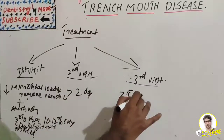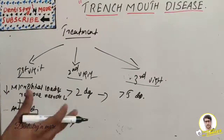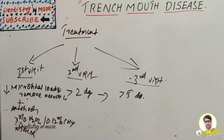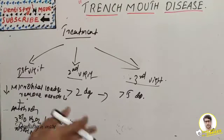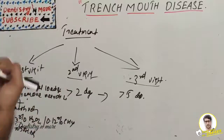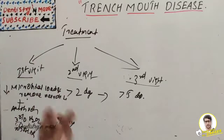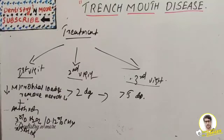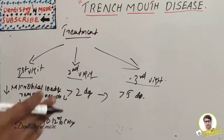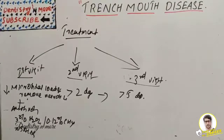On the third visit, approximately five days after the second visit, the patient is evaluated again and a comprehensive plan for management of the periodontal condition is formulated. Hydrogen peroxide rinsing and chlorhexidine mouthwash are continued along with supportive therapy such as rest, appropriate fluid intake, and a soft nutritious diet. Scaling and root planing are performed if required, and the patient is re-instructed on plaque control, nutrition, and smoking cessation. Treatment for pockets or flap surgery may be initiated, with re-evaluation after one month.